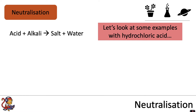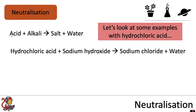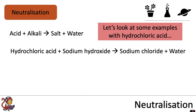Let's look at some examples with hydrochloric acid. Hydrochloric acid reacting with an alkali — sodium hydroxide — produces a salt, which is sodium chloride, plus water. To get the name of the salt, you take the first part of the alkali — in this case sodium — as the first word. The second word depends on what acid you're using. Since we're using hydrochloric acid, we make a chloride. So: hydrochloric acid plus sodium hydroxide makes sodium chloride plus water.